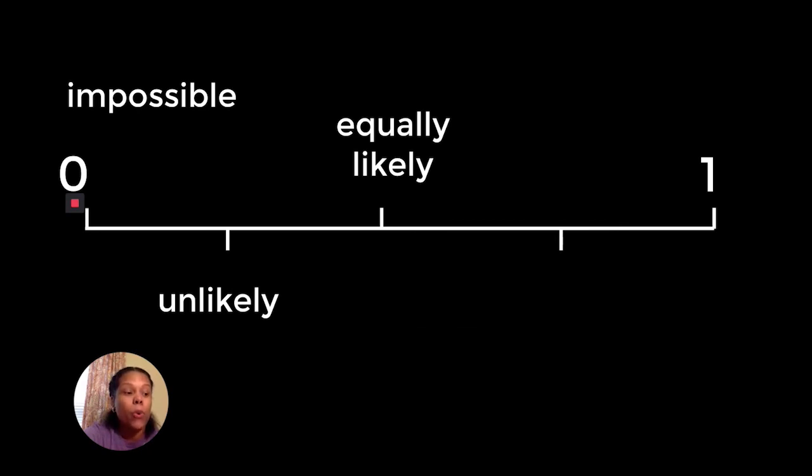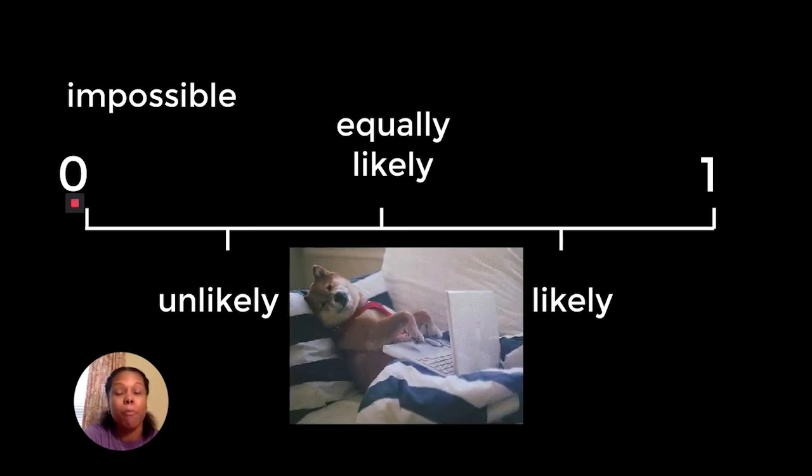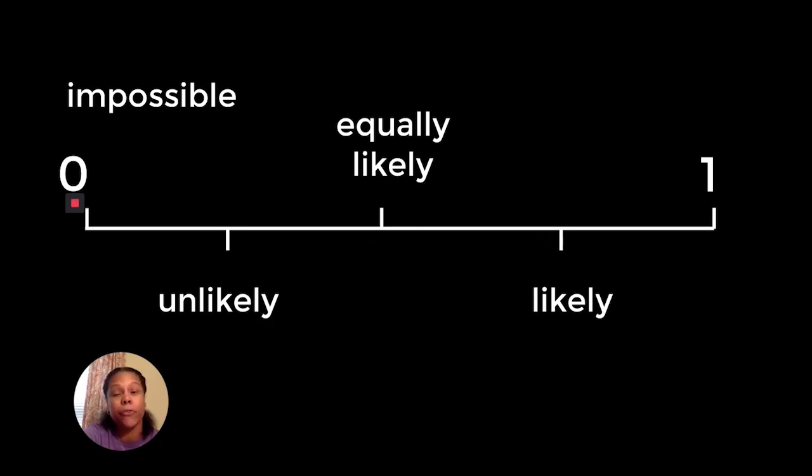Next on our number line we have the term likely. We have already seen examples of when an event is likely to happen. Likely means it has a pretty good chance of occurring. It is likely that you are viewing this video on a laptop because I know there are many students who have laptops, but it's not certain. I can't be certain everyone is viewing this on a laptop because students have other devices such as tablets and cell phones to use as well.